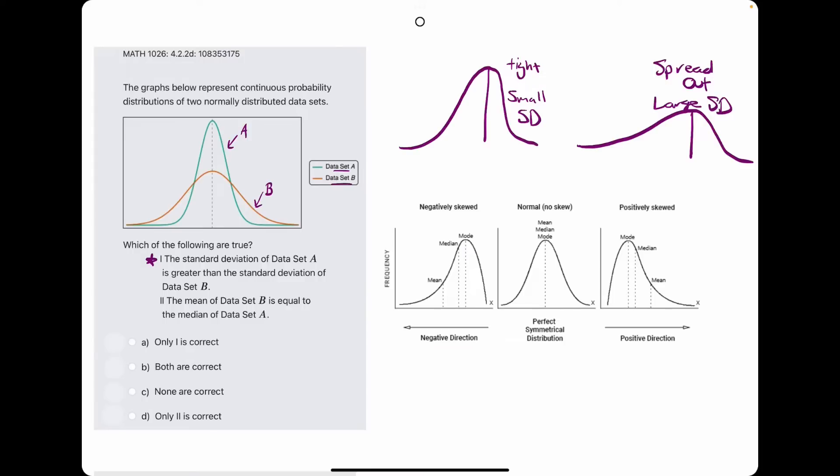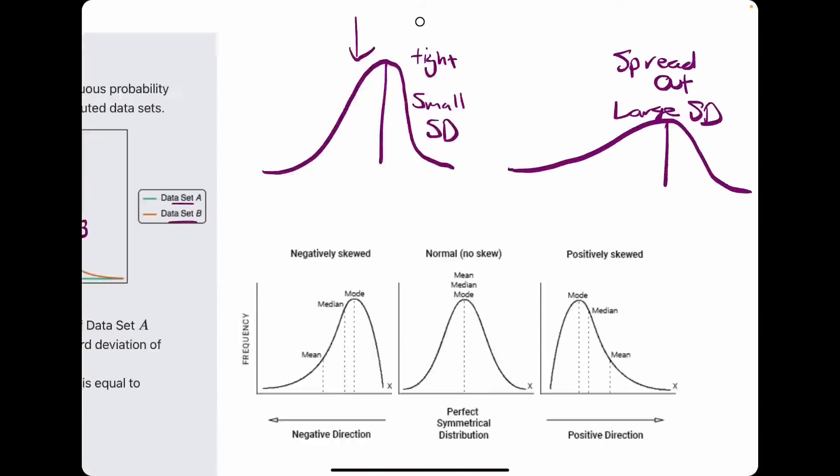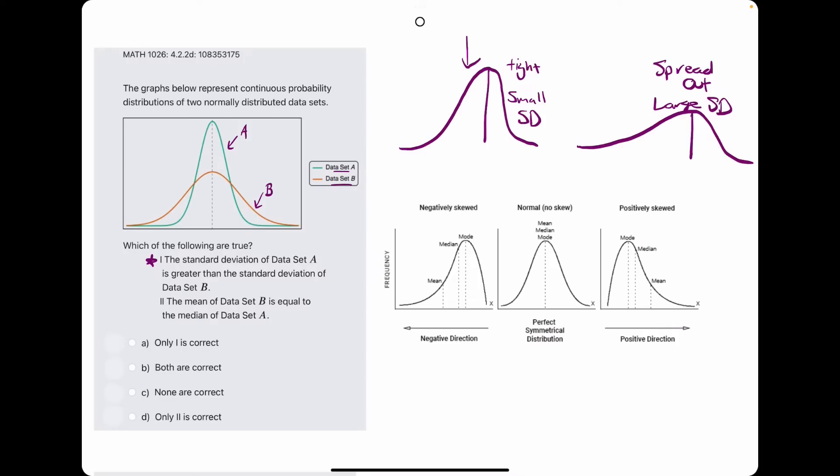The mean is in the middle. So the tighter the spread is, the more narrow it is, you have a smaller standard deviation. And the more spread out, the larger the standard deviation is.